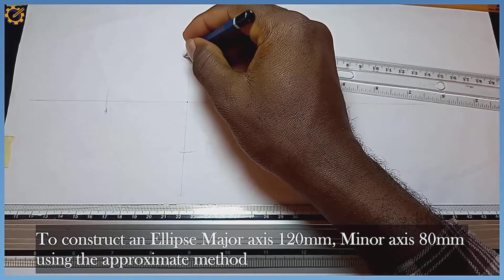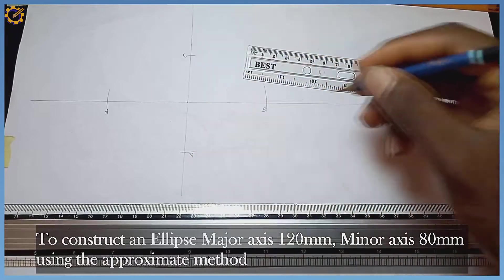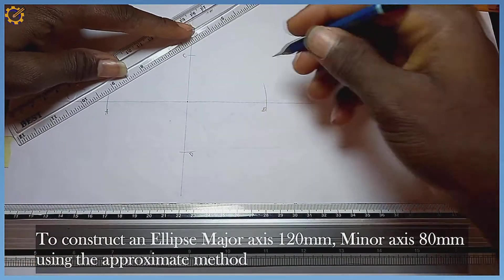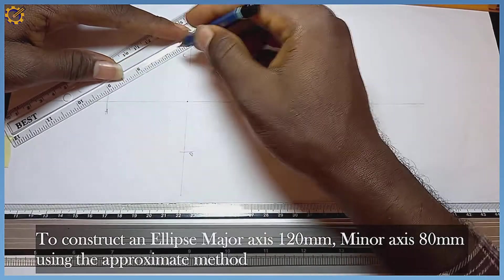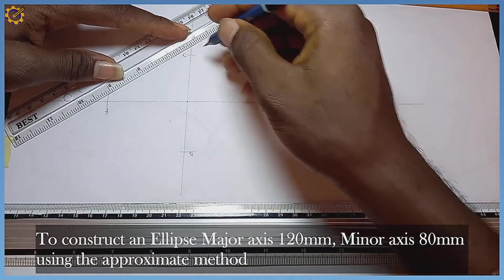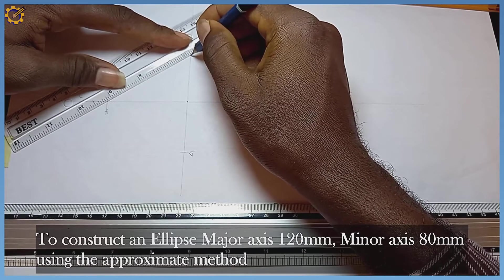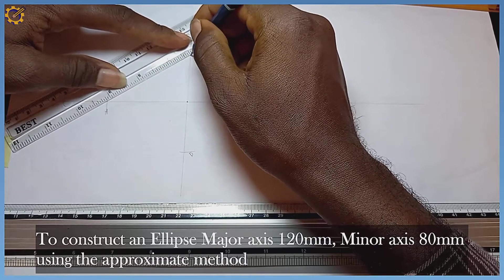Applying the approximate method, my next procedure is to join either AC or BC. I'm going to join mark A to C with a thin straight line.